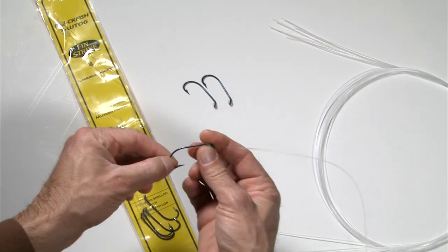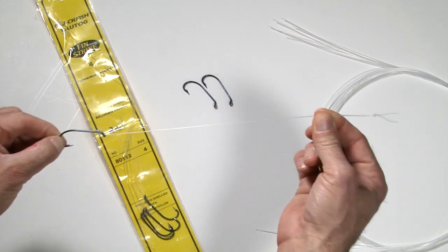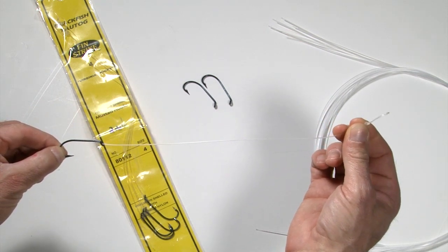These rigs usually consist of a hook with a leader and a loop on the end for attaching to your main line.